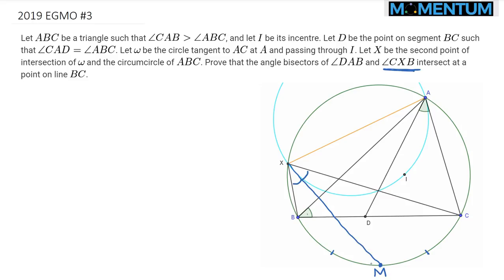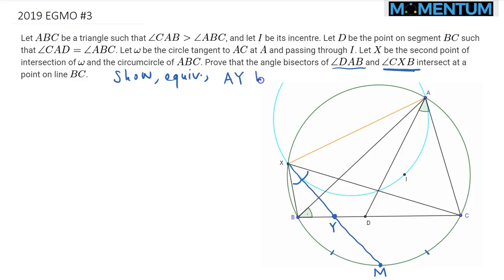Instead of showing that the two angle bisectors meet on segment BC directly, I'll label the intersection of XM — the angle bisector of CXB — with segment BC as point Y. Equivalently, I would like to show that AY bisects angle BAD. I hope it's clear that these are equivalent statements.